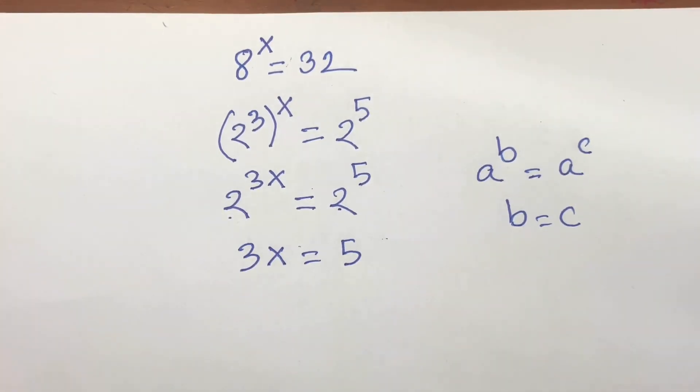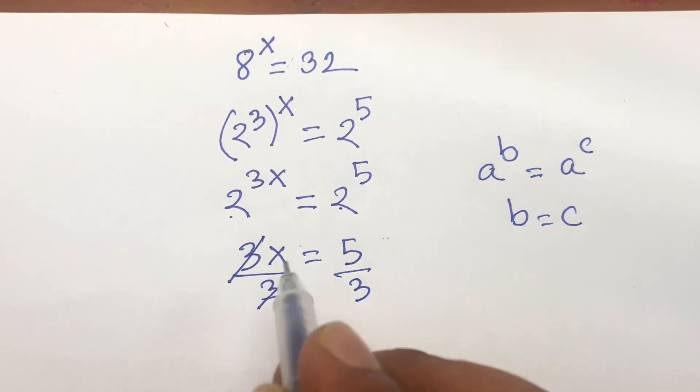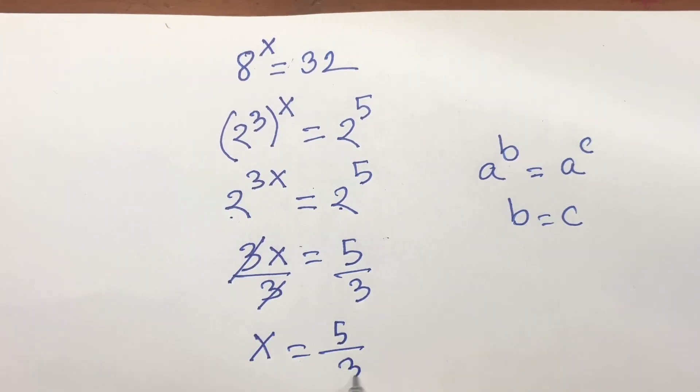Now I divide both sides by 3. This 3 and this 3 are cancelled, where we find out x is equal to 5 over 3.